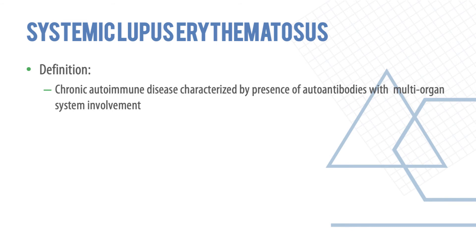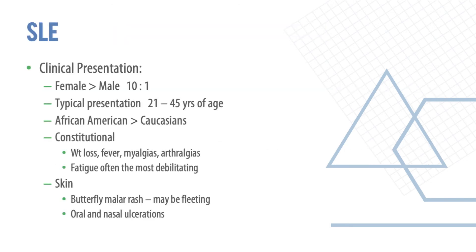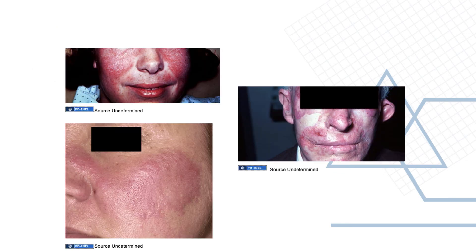SLE is a chronic autoimmune disease characterized by the presence of autoantibodies with multiple organ system involvement. Etiology includes a genetic predisposition combined with factors that alter immune cell function, resulting in production of autoantigens and thereby autoantibodies. Female to male ratio is 10:1; typical presentation is at 21–45 years of age, and African Americans are more affected than Caucasians. Constitutional symptoms include weight loss, fever, myalgias, arthralgia, and fatigue, which is often the most debilitating problem. The skin shows a butterfly malar rash, which may be fleeting, along with oral and nasal alterations.